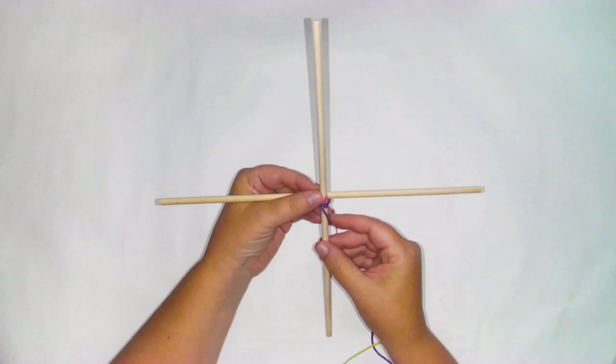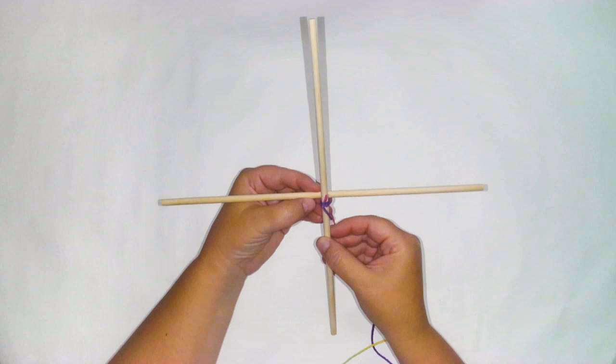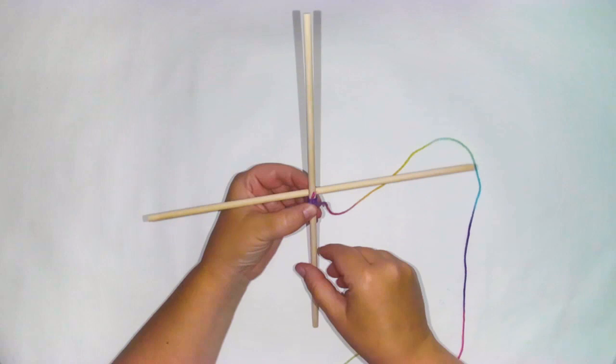Now that you have wound some yarn around the wooden dowel and tied a double knot, you're going to place it on top of the second dowel. Try to do your best to center both dowels. You do have the ability to shift things around as you're working, but if you can start with things mostly in the center, it will help you in the long run.